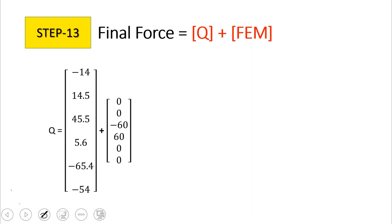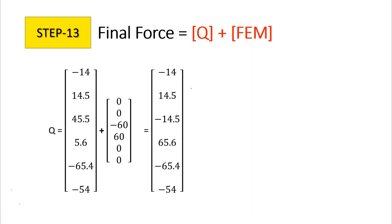The final step is to find the final forces: Q_final = q + FEM. Adding the element forces and fixed end moments gives the final forces acting on the frame as: −14, 14.5, −14.5, 65.6, −65.4, and −54 kN·m. These values can now be used to draw the bending moment diagram for the frame.